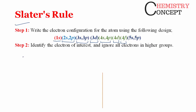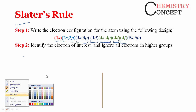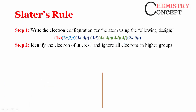After arranging, identify the electron of interest — meaning identify which orbital or subshell's shielding constant you need to find. For example, if I have to find the shielding constant for electrons in the 4p orbital, I will ignore all electrons in groups higher than 4p, because those electrons do not participate in shielding. Shielding is done only by inner electrons.